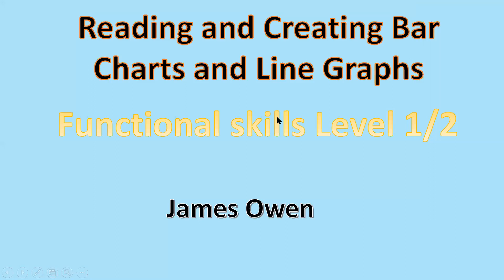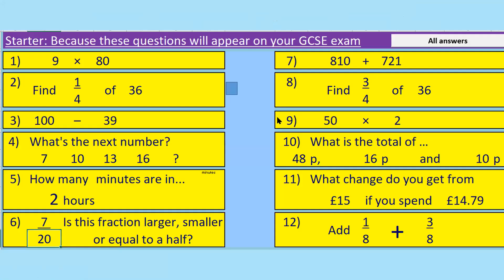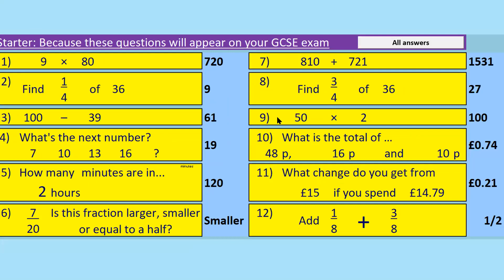We're starting the lesson with a starter activity — we have 12 questions. Please write the questions and answers down in your books or on your paper and take your time. Pause the video for two to three minutes and then play it again to see the answers. Please mark your work honestly — if you get one wrong, put a cross and write the correct answer next to it. Give yourself an honest score out of 12.